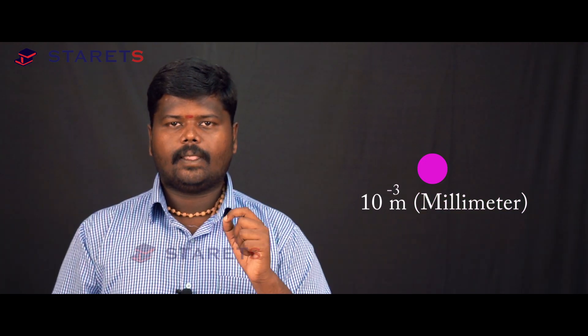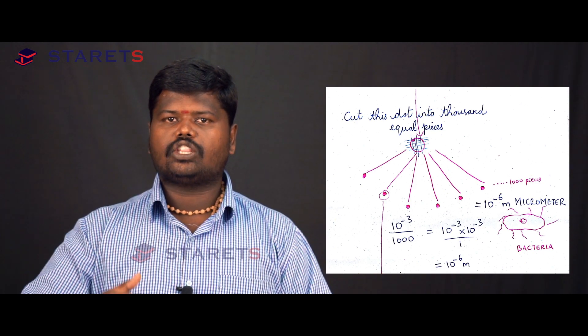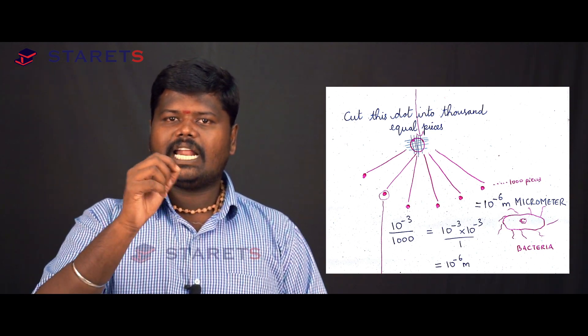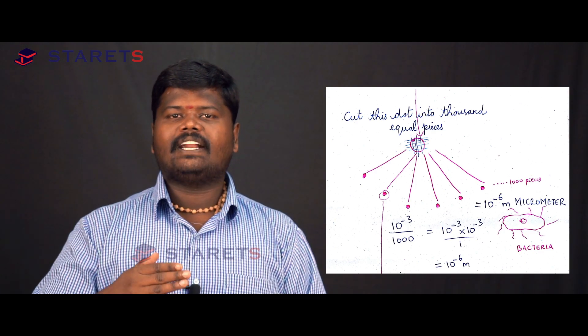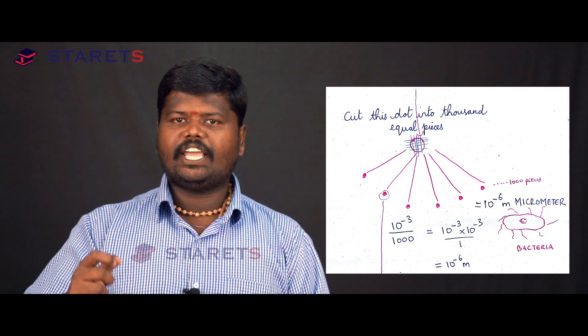From the thousand pieces, take one piece and cut it again into a thousand. We get a very, very minute dot that can't be visualized by eyes — we can only imagine it. The original dot is around 10 to the power minus 3 meters, which is a millimeter. Cutting that millimeter into a thousand pieces gives 10 to the power minus 3 divided by 1000, which equals 10 to the power minus 6 meters — this is called a micrometer.